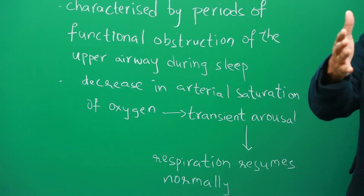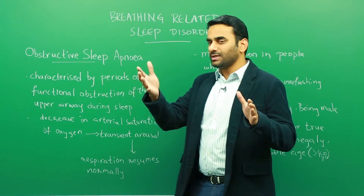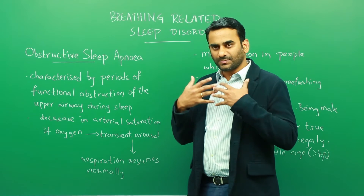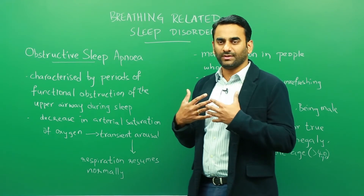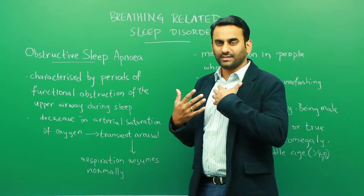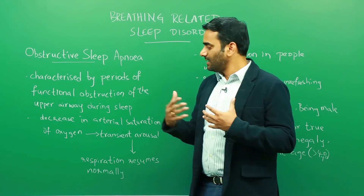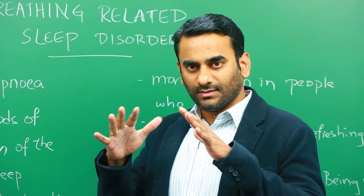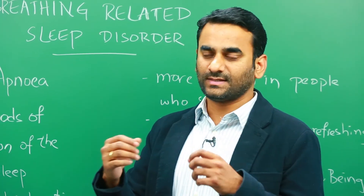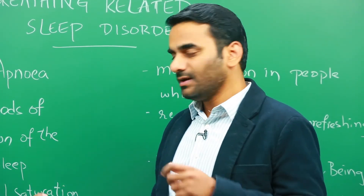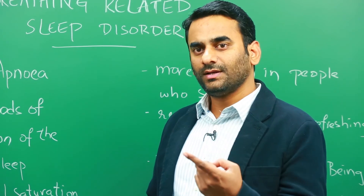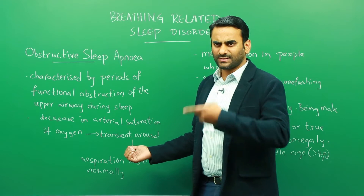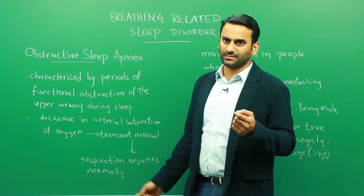So this becomes a cycle. There is a period of sleep, and gradually it builds up to a point where there is obstruction in the airway, especially in the upper respiratory tract. This is followed by decreased arterial saturation, which causes arousal, and the arousal is followed by normal respiration. This cycle can turn vicious in certain situations.